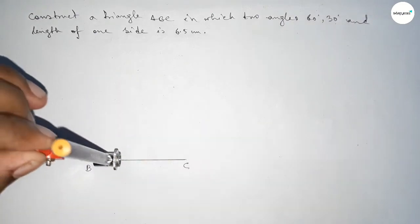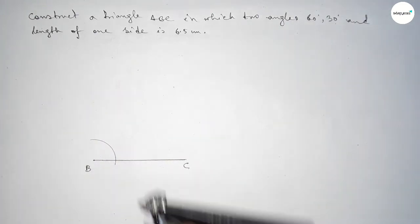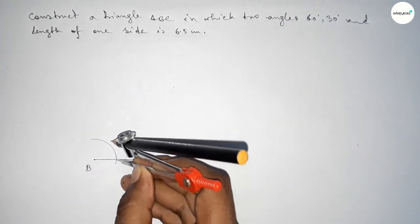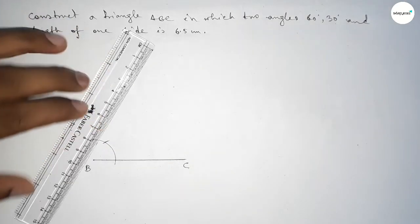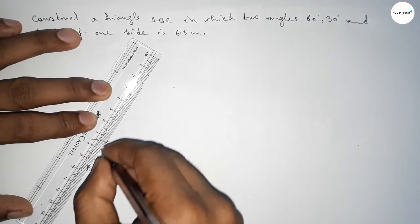Putting the compass here and drawing an arc by this way, and putting the compass here with the same length and cut here so both curves intersect at a point. Now joining this line to get here a 60 degree angle.